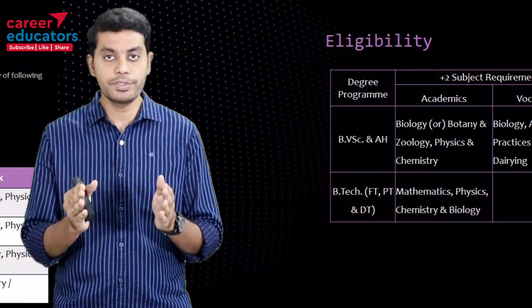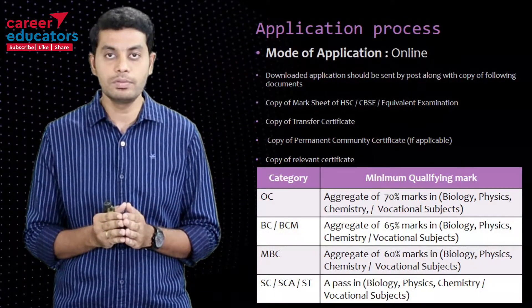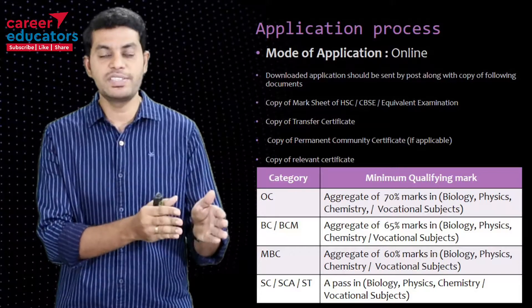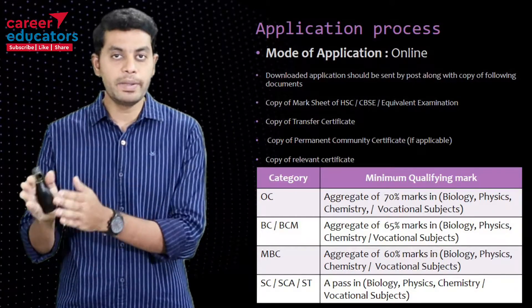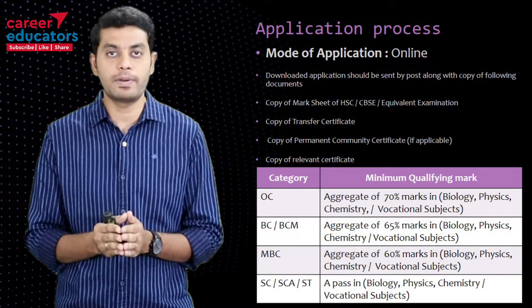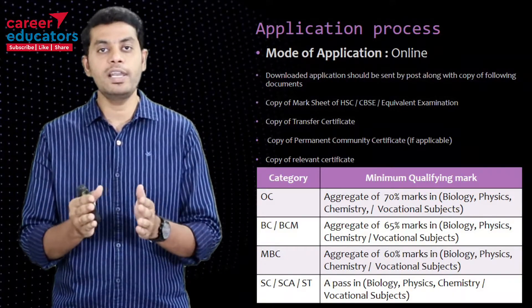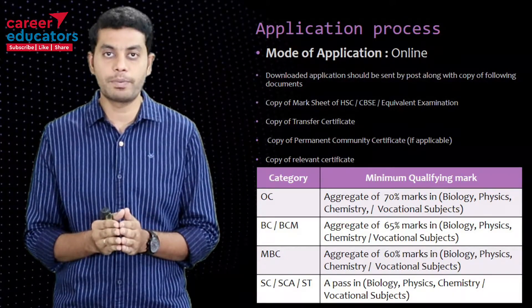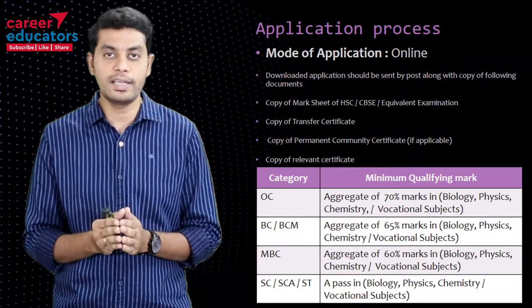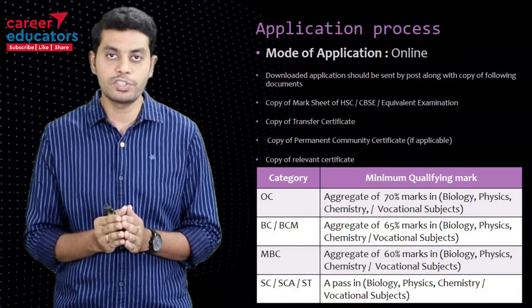Veterinary institute applications are online only. You can apply for either BVSE or B.Tech. You can apply for two course segments. Once you complete the application, you can download the application copy, and if you have any certificates, you can send them to the university.